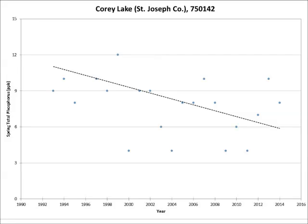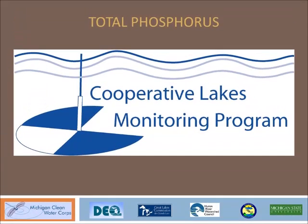At the end of the year, you will receive a data report that gives your phosphorus results and the long-term trends of your lake. This data is valuable in showing both you, other lake residents, and the Michigan DEQ if there are ongoing threats to the lake's water quality. Thanks for watching, and we hope this video was helpful for reminding you how to take total phosphorus samples in the Cooperative Lakes Monitoring Program.